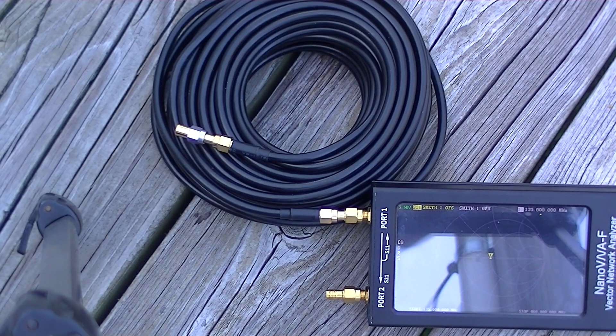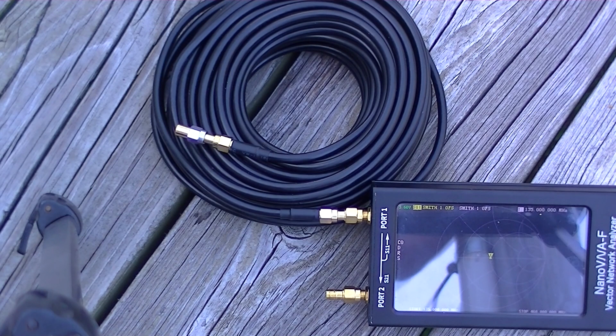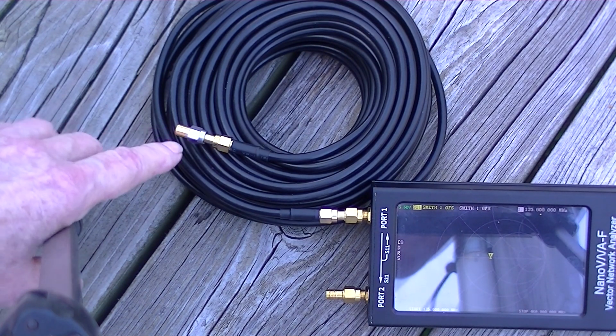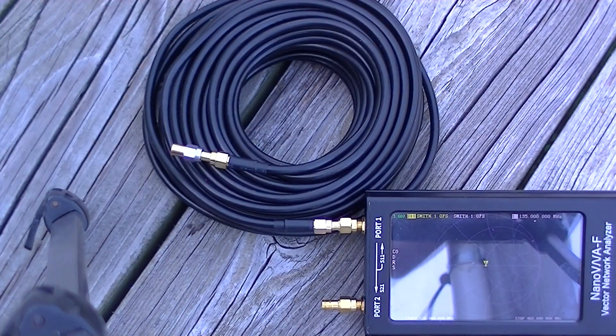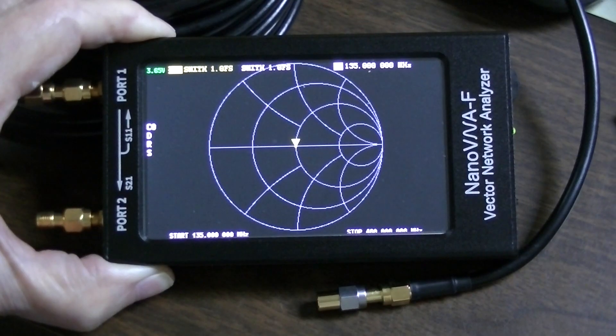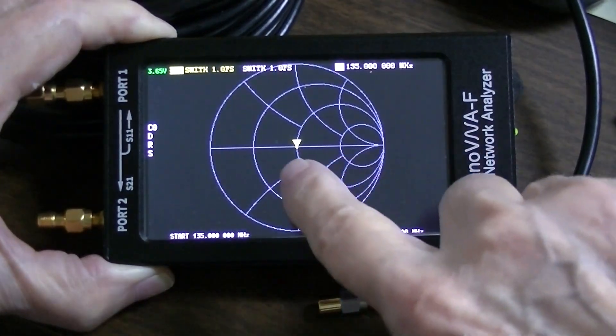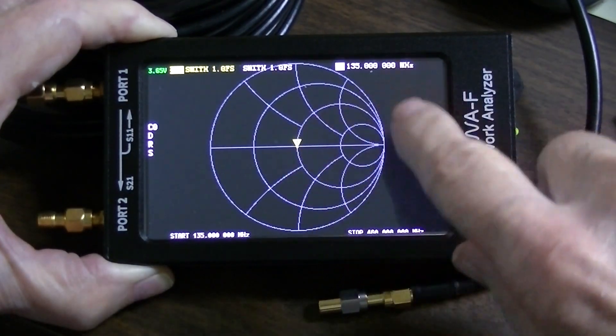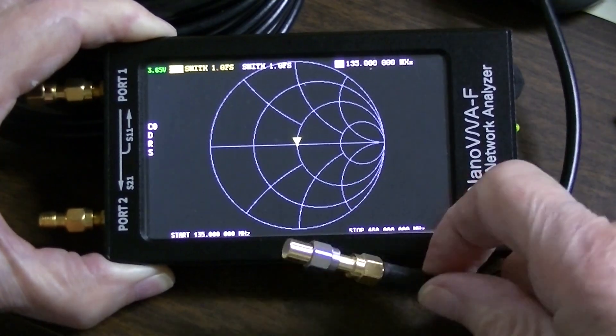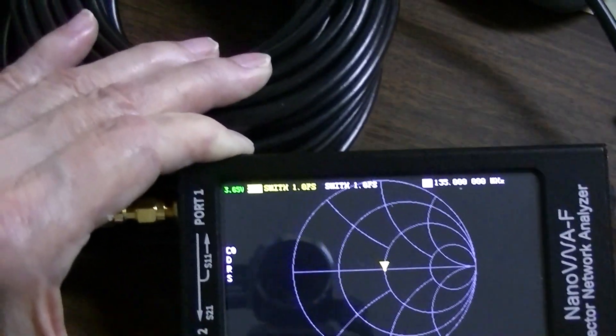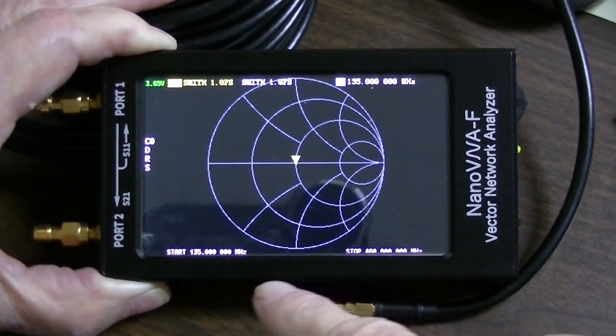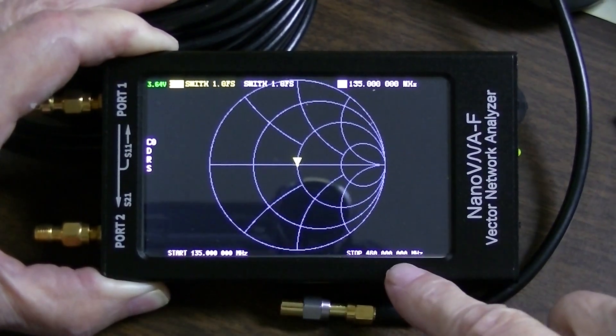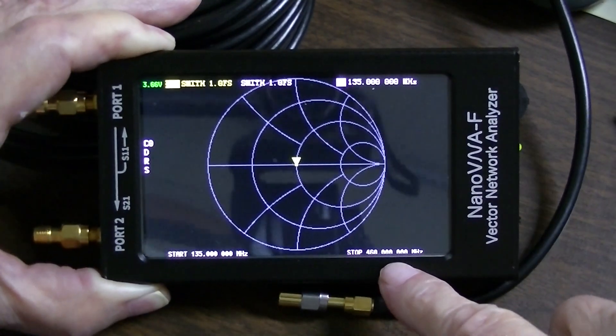Here's the VNA hooked to some coax that I intend to use to feed the antenna. This is a termination resistor, 50 ohms, at the end of the coax. Looking at the Smith chart, you'll see we're right at 50 ohms with the 50 ohm attenuator at the end of the roll of coax.